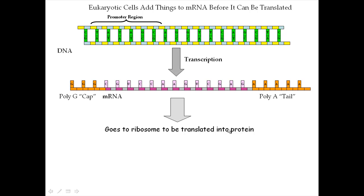What we're doing is we're taking a look at how a cell uses the information on DNA in order to make a protein. What we've just seen is that this is actually a two-step process. The first step is that the cell reads the information on DNA in order to make a messenger RNA molecule in a process called transcription. The second step is that the messenger RNA then goes to the ribosome where it's directly used to make a protein, and that process is called translation.